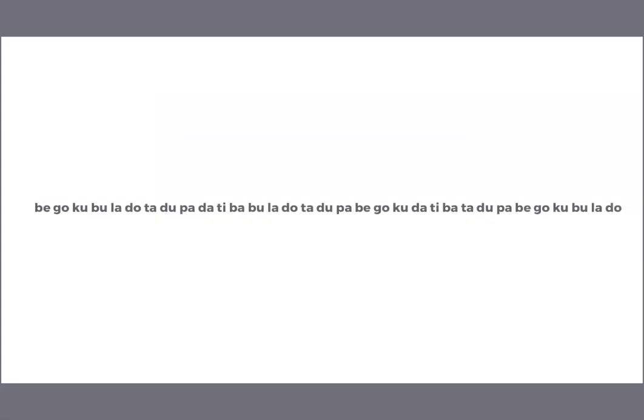Here's a written representation of the language that you just heard. The question is: where are the words in this language? For example, is 'dupabe' a word, or 'dupabe'? What about 'b-goku'? One way that you might be able to figure out the words is by learning the statistical structure of the different syllables in the language — which syllables reliably predict other syllables? What are the patterns?